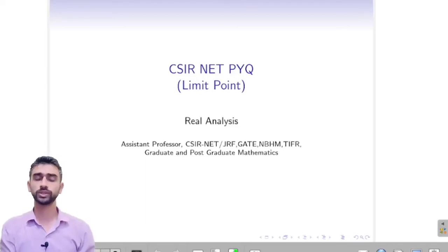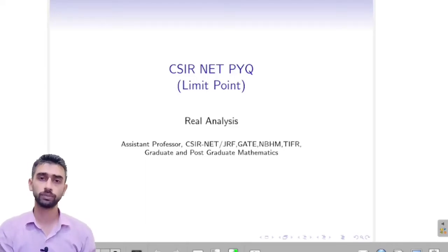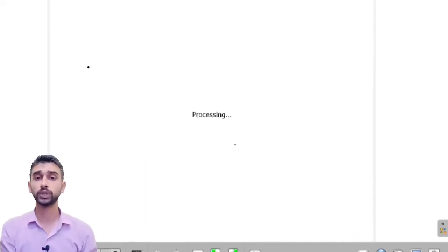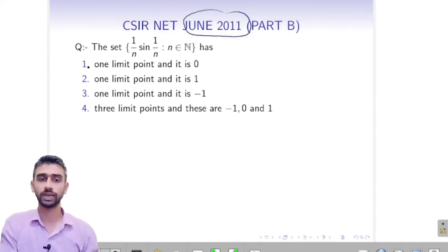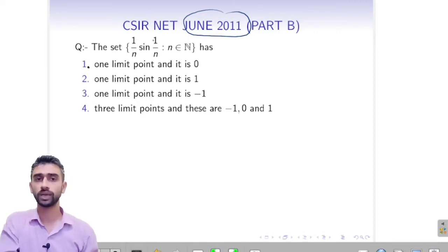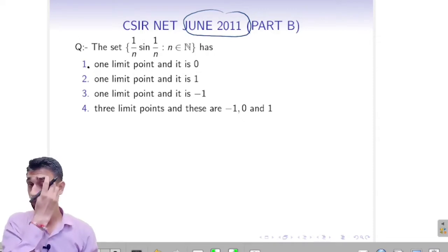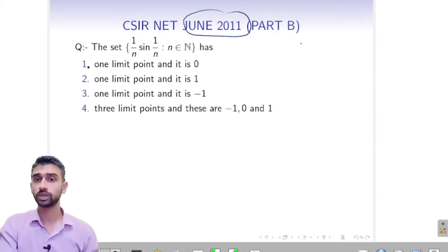We will look at previous year questions related to limit points. One such question is from June 2011, Part B — only one option is correct. It gives the set {(1/n)·sin(1/n)} and asks for the limit points. So what can be the limit points of (1/n)·sin(1/n)?